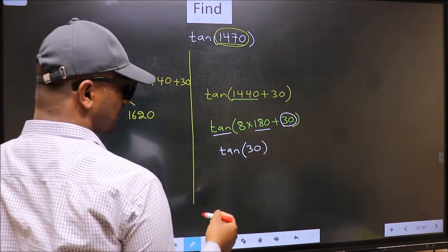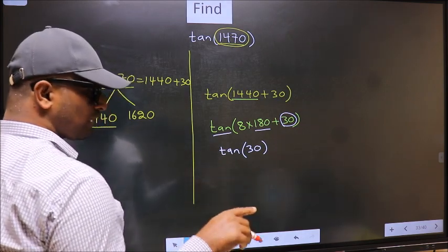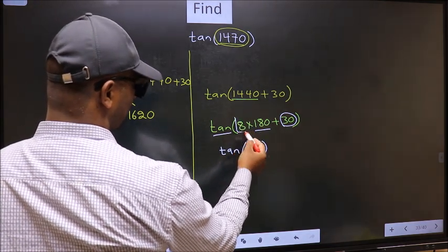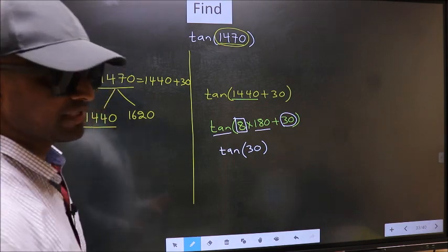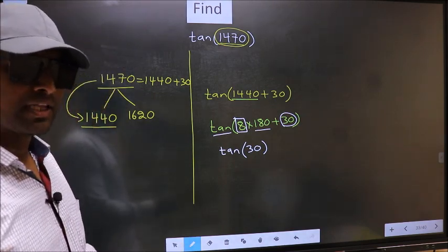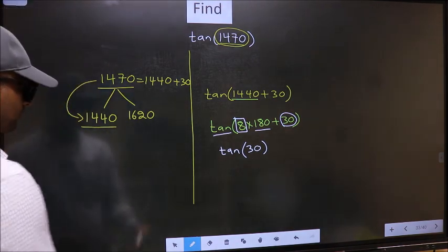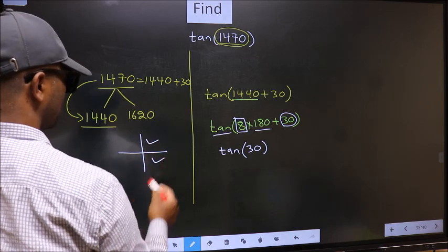Now the question is, will we get here plus or minus? To answer that, we should look at the number before 180. That is 8. And 8 is even. And all the even multiples of 180, they lie either in the first or in the fourth quadrant.